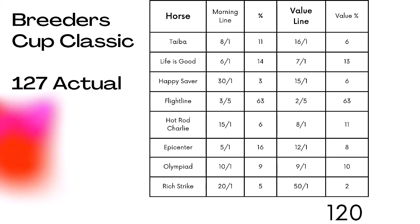Happy Saver was 30 to 1 on the morning line, but I liked him better at 15 to 1. Hot Rod Charlie was 15 to 1 on the morning line, but I pegged him at 8 to 1 — I thought he had a chance to run a better race. When you add all these numbers up on the right, the value line came to about 120. Rich Strike was 20 to 1 on the morning line, but I thought he was more like 50 to 1 on the value line — that's how the difference came to be.